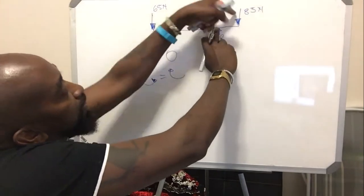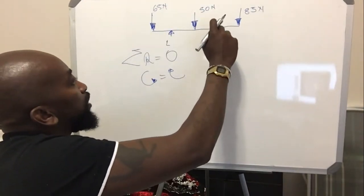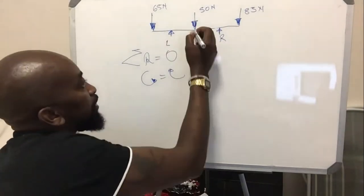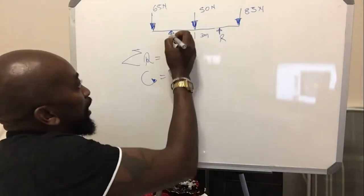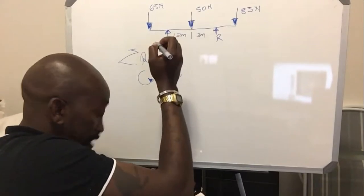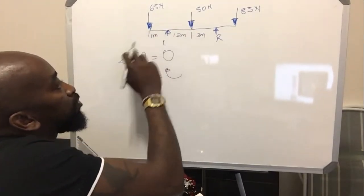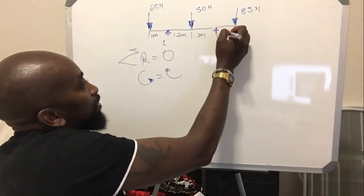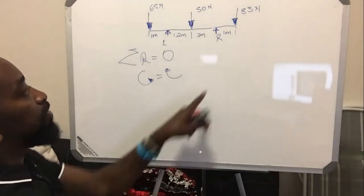We've got L as the unknown, and 65, 50, and 85 acting on this body. From this point we look at the distances given: this is 3 meters, the distance between L and 50 is 1.2 meters, and this is 1 meter from L to the end of the beam. The 85 is 1 meter away from point R.